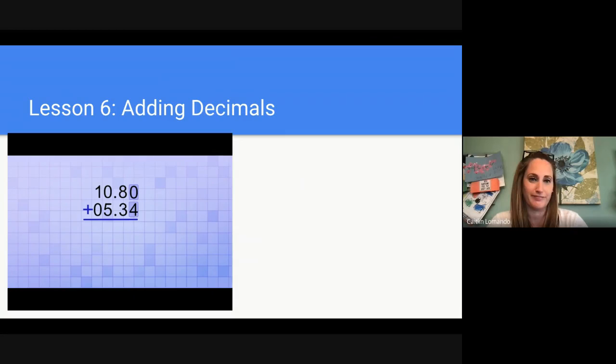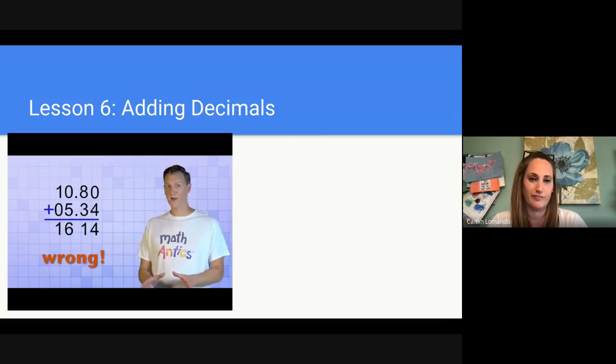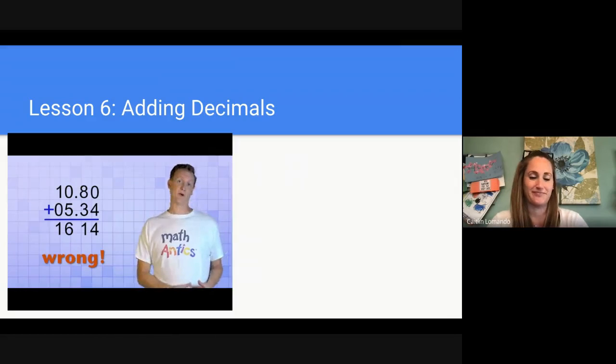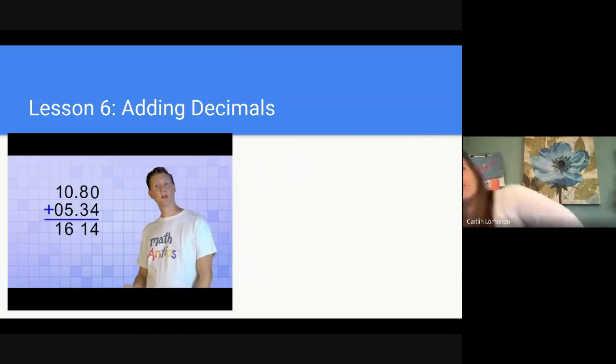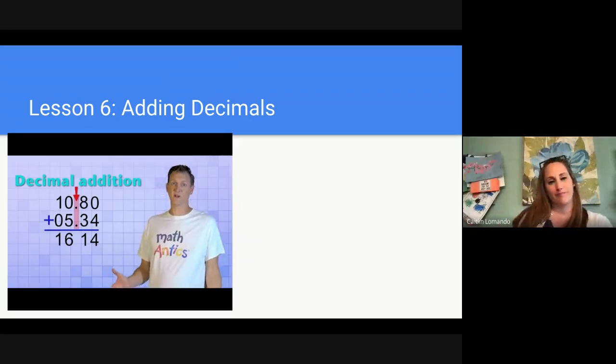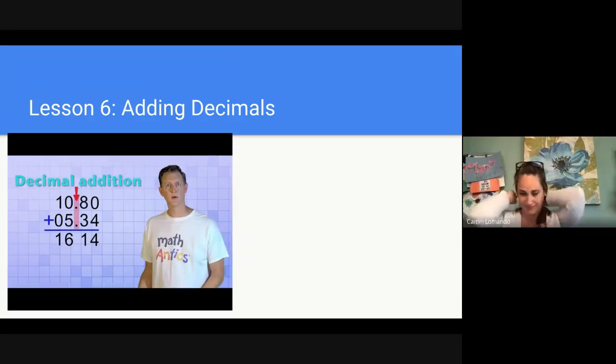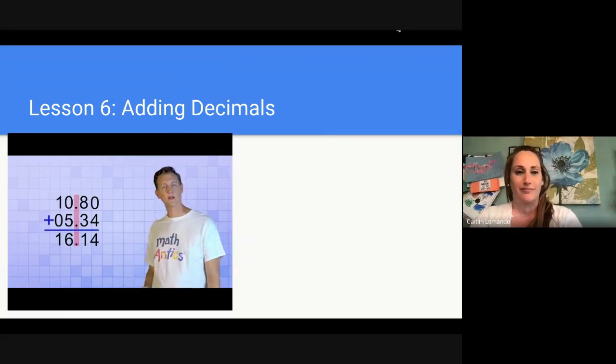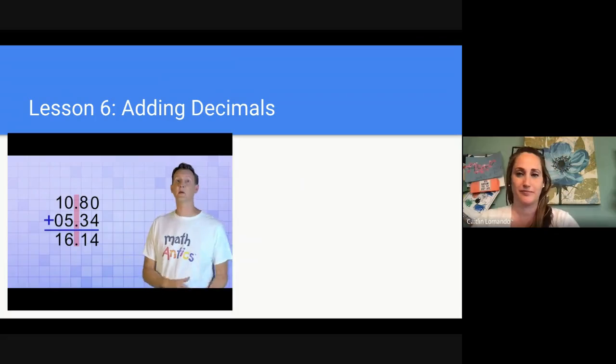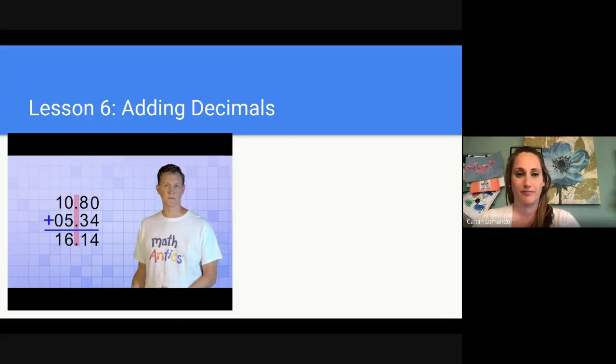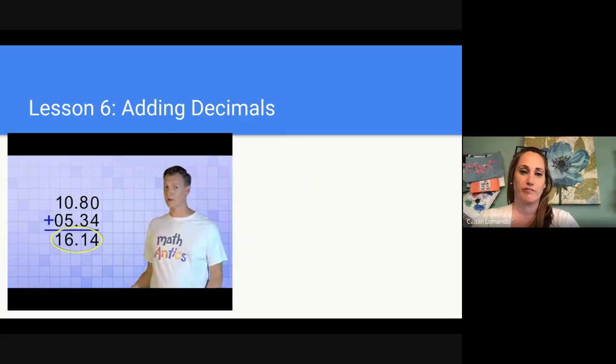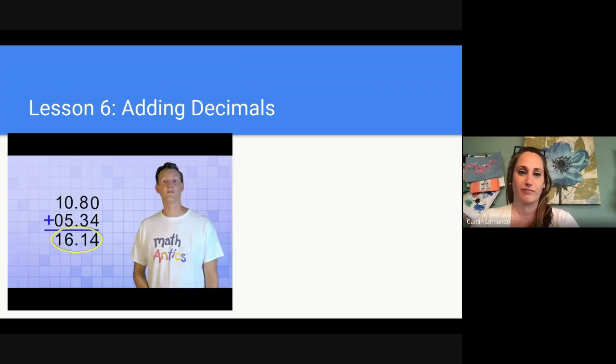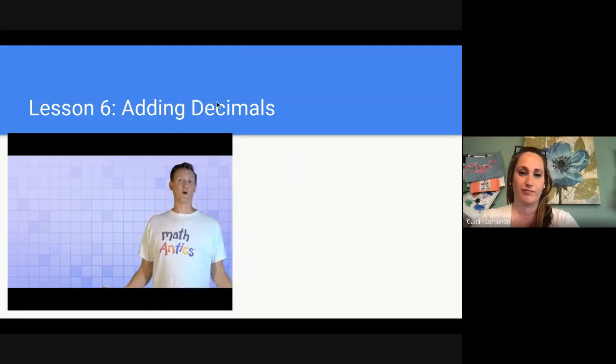So, we add the digits in each column, carrying or regrouping as needed, and we get 1614. So we're done, right? Wrong! There's one last, really important step. Remember, we're doing decimal addition, so we can't just forget about that decimal point. We need to bring a copy of it straight down into our answer line, so we keep the same reference point for our number places. Now we can see that the answer is really 16.14. That's not so hard, is it?